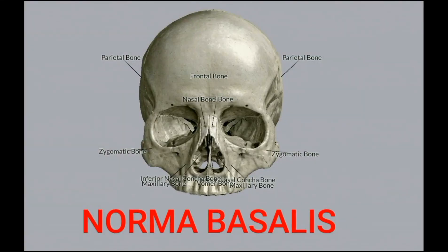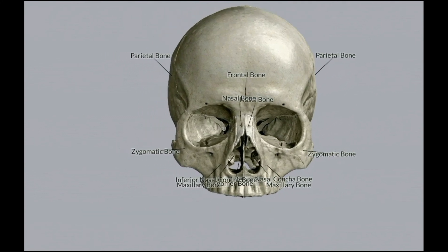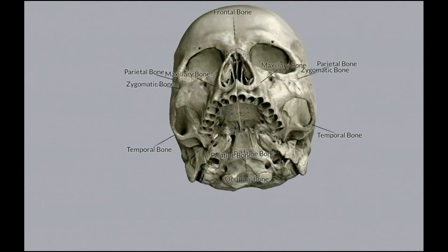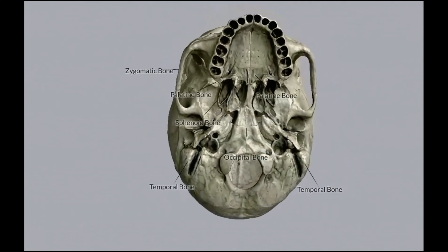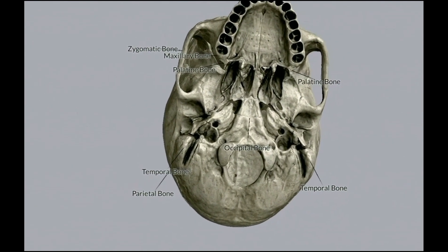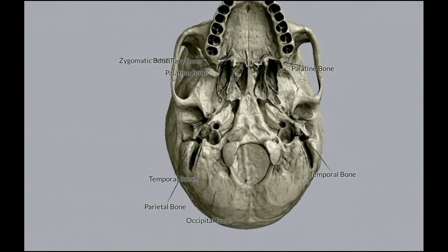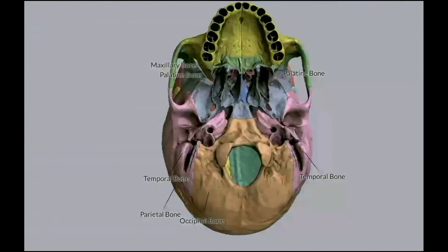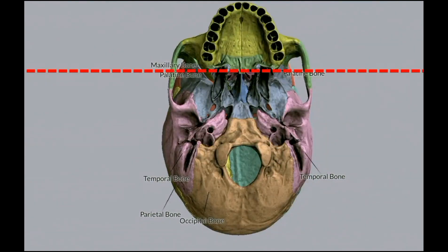Hi friends, now we will see norma basalis, that is the basal view of the skull. In the previous videos we have discussed about the frontal view, vertical view, and lateral view where we have discussed different features and attachments. Today we will discuss about the norma basalis.